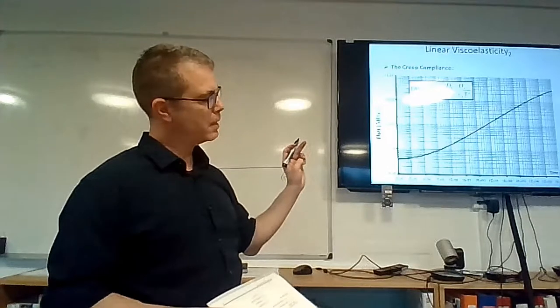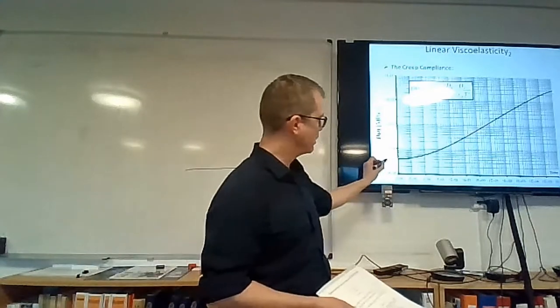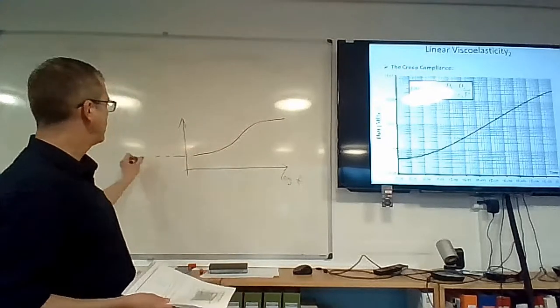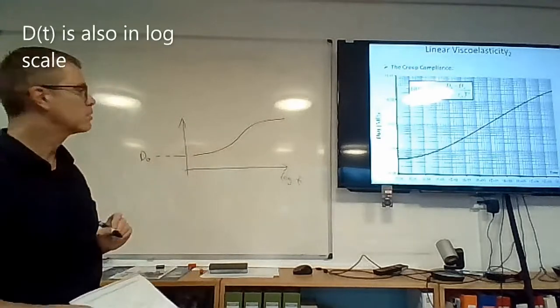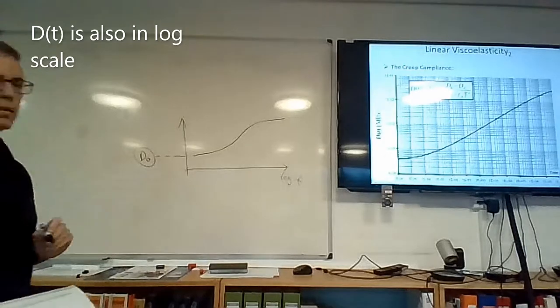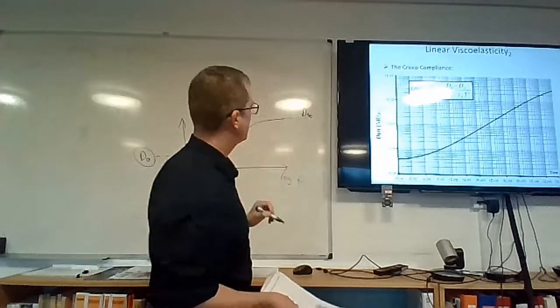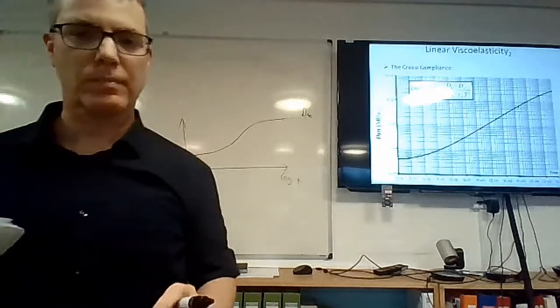If we were to look at this curve, I would plot this here. So the creep compliance is kind of leveling off, reaching the instantaneous compliance, which we defined previously as D zero. And it would be leveling off at infinity and the value would be D infinity.